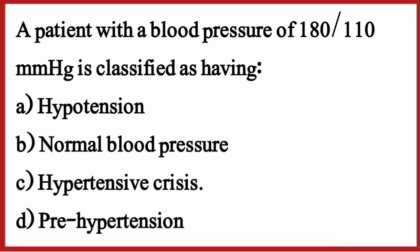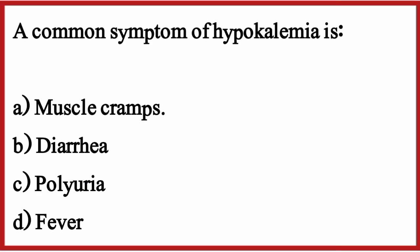A patient with a blood pressure of 180/110 mmHg is classified as having — the correct option is option C: Hypertensive crisis. A common symptom of hypokalemia is — the correct option is option A: Muscle cramps.